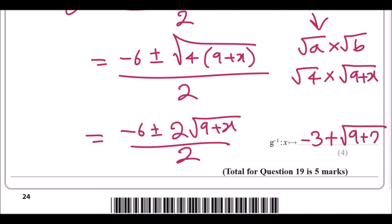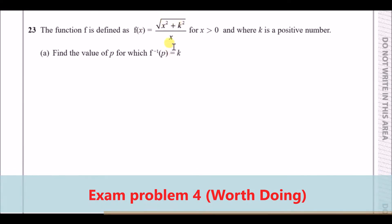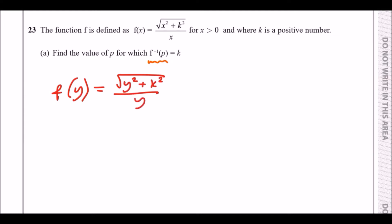The function f is defined as f(x) = √(x² + k²) / x for positive values of x, where k is a positive number. Find the value of p for which f⁻¹(p) = k. To find the inverse function, replace f(x) with y: y = √(y² + k²) / y, then set this equal to x — and since they want the value p, replace x with p.